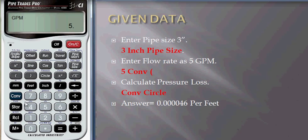Now to calculate pressure loss just press convert and press circle. You can see pressure above the circle so that it will give pressure loss. So our answer is shown 0.000046 per 1 foot.